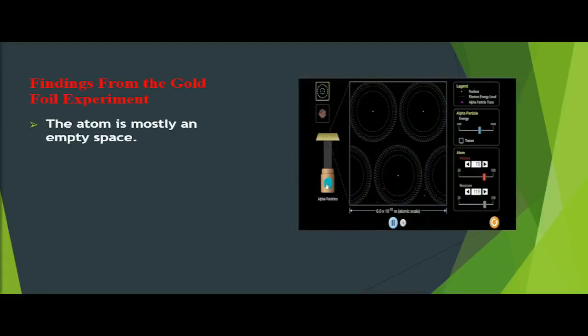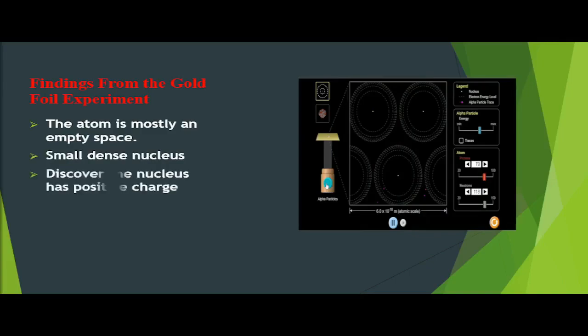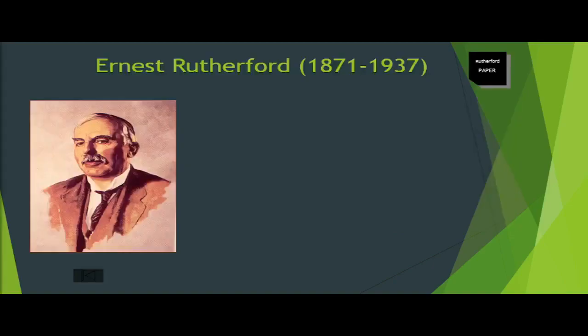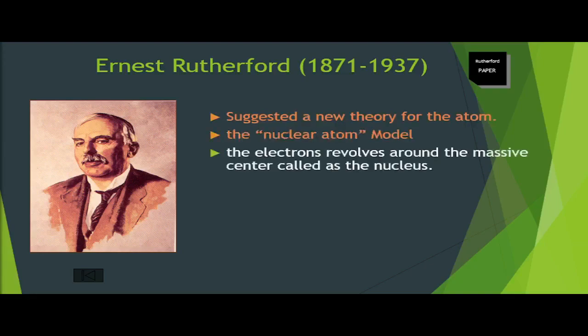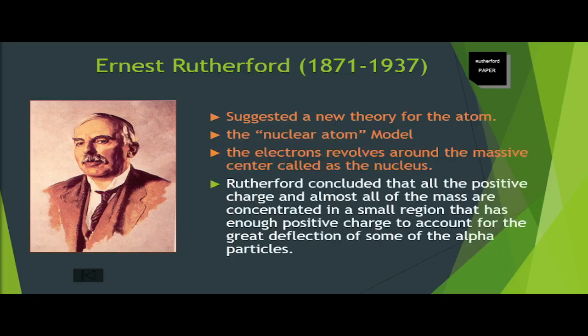From these observations, Rutherford realized that: one, the atom is mostly empty space; two, there is a small dense center with a positive charge; three, Rutherford discovered the nucleus in atoms. Based on these experimental results, Rutherford suggested a new theory about the atom. He also suggested a new model for the atom called the nuclear atom model where the electrons revolves around the massive center called as the nucleus.